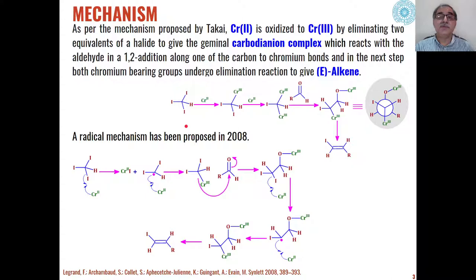As far as the mechanism of this reaction which was proposed by Takai is concerned, in the first step iodoform reacts with chromium chloride in its +2 oxidation state and chromium(II) is oxidized to chromium(III) with the replacement of one of the iodide. Then this intermediate with chromium(III) reacts with another chromium(II) molecule and we get a carbodianionic complex. On reaction with aldehyde with this chromium(III) intermediate, this carbodianionic complex gives us the final product with E-alkene as the product.